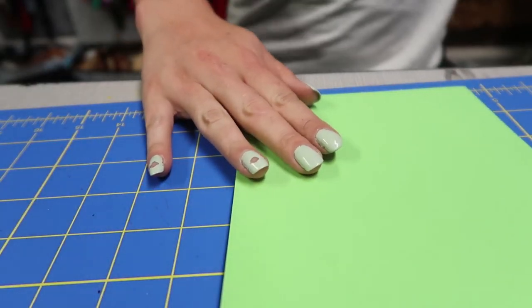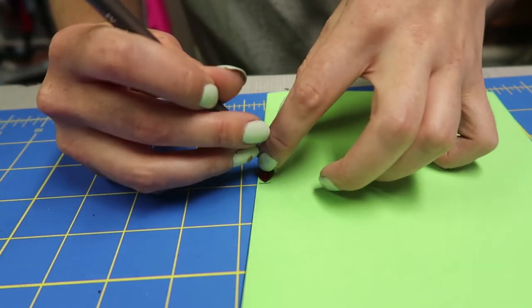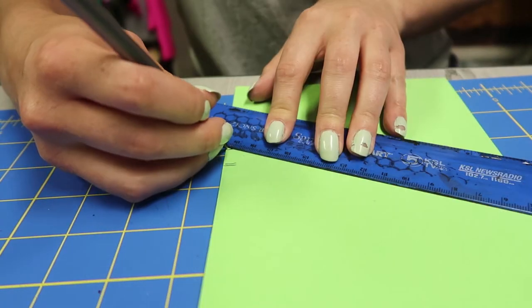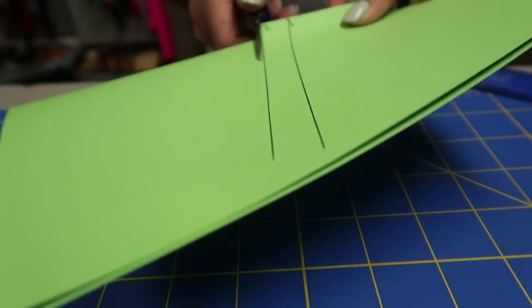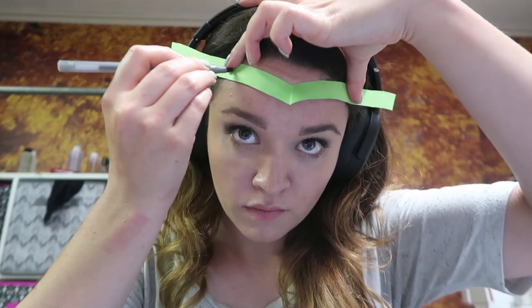Next is the Sailor Crown. These are super easy. Just take a piece of paper, fold it in half, draw a slightly curved v-shape on it, and cut it out. Hold it up to your forehead to test out the shape and make any adjustments to the pattern until you like it.